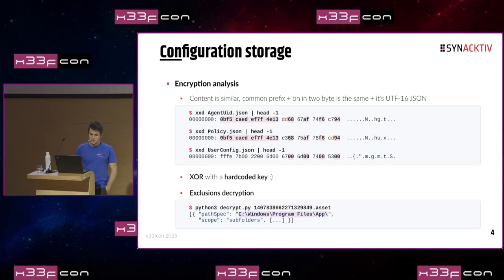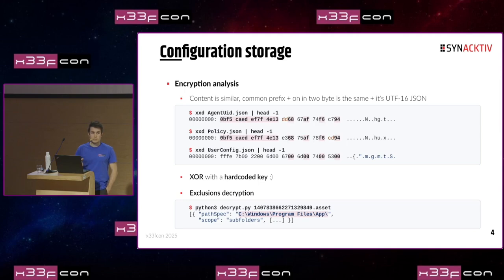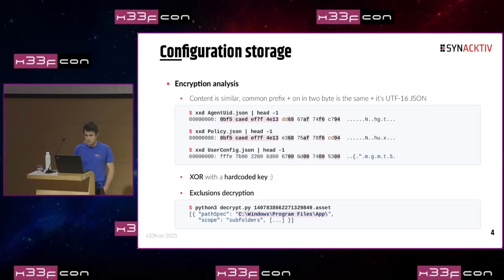Because user-config.json is JSON encoded in UTF-16, we can guess that this is XOR encryption with the same key for each file. By just comparing the different bytes, we can recover the key. The XOR key is actually hard-coded into the SentinelOne agent, and it is the same for every customer around the world. By extracting this encryption key, we can access the actual content — specifically what we were looking for: the exclusions.